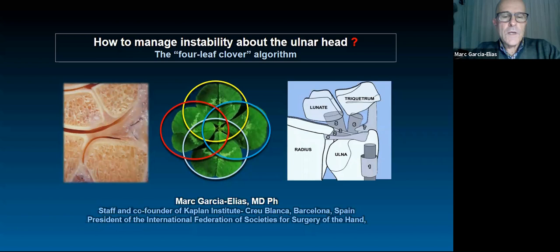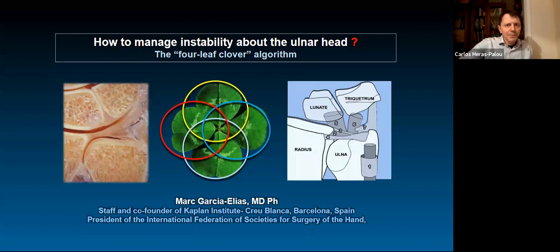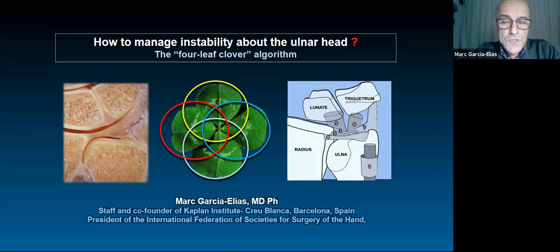Good evening everybody, ladies and gentlemen. It's my real pleasure to be here tonight. Welcome to another session of this Pulvertaft Hand Center. Last week we enjoyed a very interesting talk on the biomechanics of the forearm by Dr. Louis Shecker. Tonight we will concentrate on the anatomical relationships of the distal ulna and surrounding structures — how to manage instability about the ulnar head using the so-called four leaf clover algorithm.